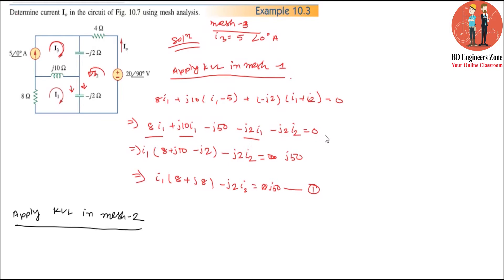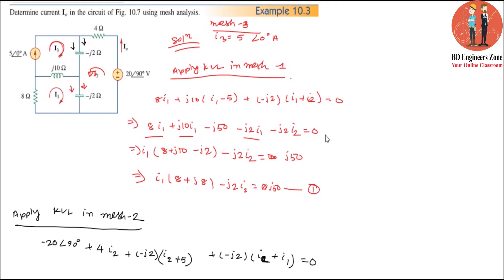Now we are going to write the equation for Mesh 2. For Mesh 2: minus j2·i2 plus 5, and 5 plus 8 equals 8, plus 5 plus minus j2 times i1 and i2, equal to 0.